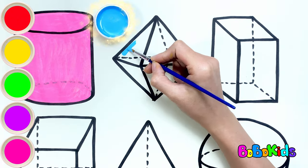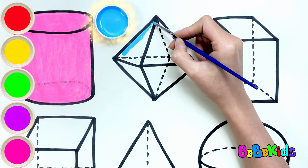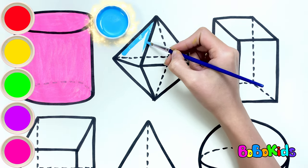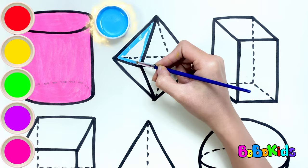Blue. The second shape is a 3D lozenge. Bobo chose blue to color it.